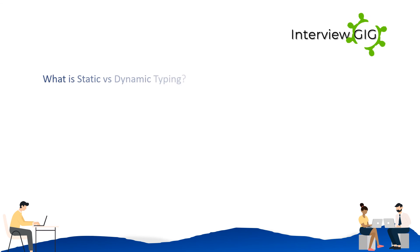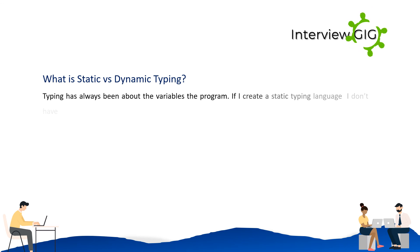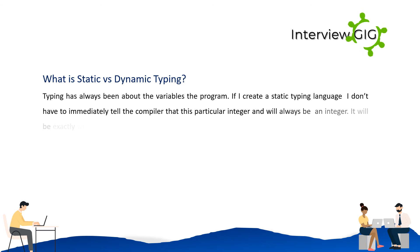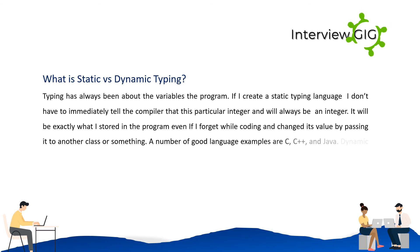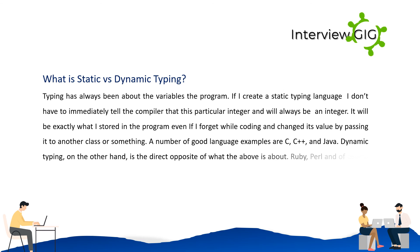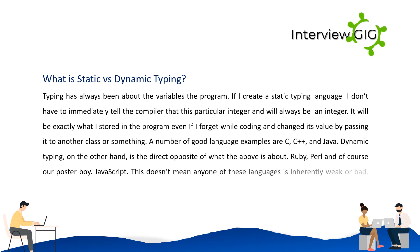What is static versus dynamic typing? Typing has always been about the variables in a program. In a statically typed language, you tell the compiler the type of a variable and it will always remain that type, even if you forget while coding. Examples of statically typed languages are C, C++, and Java. Dynamic typing, on the other hand, is the direct opposite. Examples include Ruby, Perl, and of course JavaScript. This doesn't mean any one of these languages is inherently weak or bad.